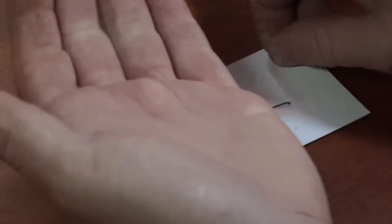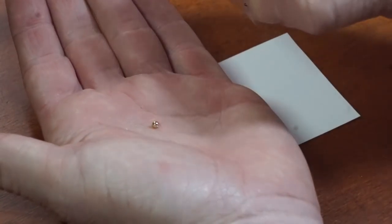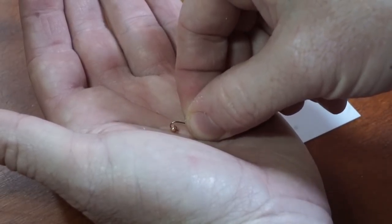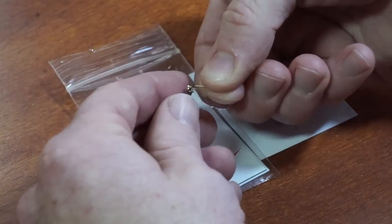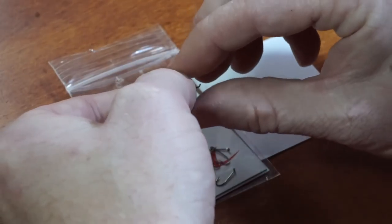We are going to start by putting a 2-3mm tungsten bead on a 1-2x long nymph hook. The easy way to do this is by putting the bead in your hand and then bringing the hook point to it. The hook I chose is a TMC 3761 in size 16.